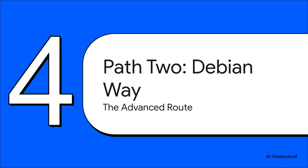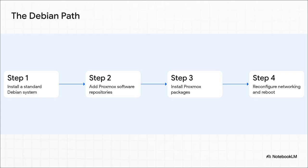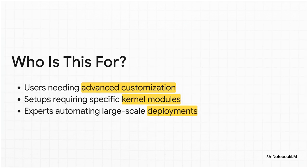So if the ISO path is so great, why does this other path even exist? The more manual, expert-level option is installing Proxmox on top of a Debian system you've already set up. You can see right away this is a whole different beast. You have to start by installing a bare-bones Debian system yourself, then manually edit files to add the Proxmox software sources, install a bunch of packages from the command line, and reconfigure really important stuff like your networking. It definitely requires you to know what you're doing. So why would anyone go through all that trouble? It really comes down to specific niche use cases — maybe you need total control over every package on the base system, or you've got obscure hardware that needs a special driver not in the standard installer. This is a power user move, not the place to start.